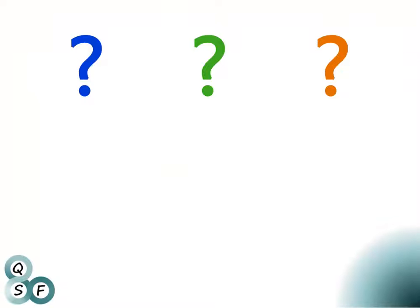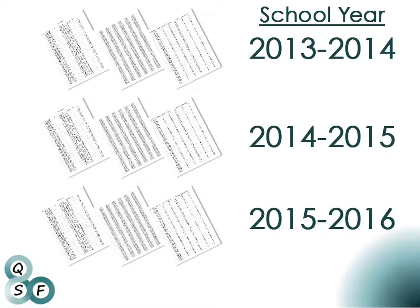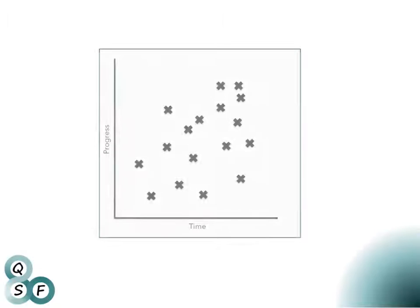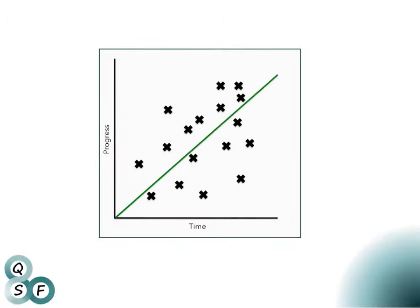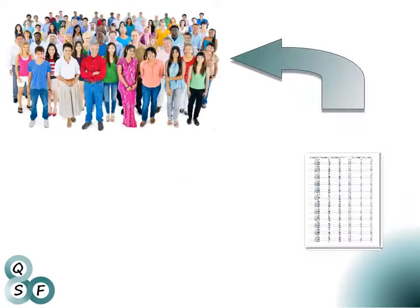Once the focus questions for the data analysis are determined, begin the needs assessment process. The process includes the following steps. Step 1: Assemble several years' data to address each of the focus questions. Examining the data over time will help identify trends. Step 2: Before sharing data with the school community, put the data in a form that will be easy to understand and use. This often means making the data visual.